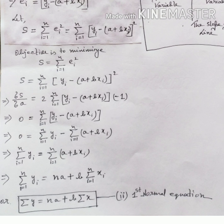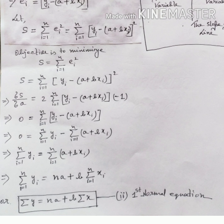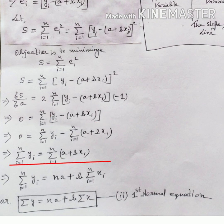Setting ∂S/∂a = 0, and since 2·(−1) = −2, dividing by −2 gives 0 = Σ(i=1 to n) (y_i − (a + bx_i)). Expanding the summation: 0 = Σ(i=1 to n) y_i − Σ(i=1 to n) (a + bx_i), and rearranging gives Σ(i=1 to n) y_i = Σ(i=1 to n) (a + bx_i).